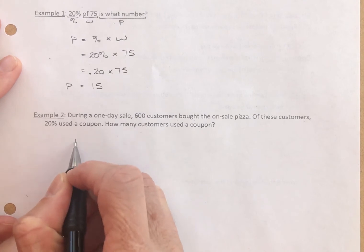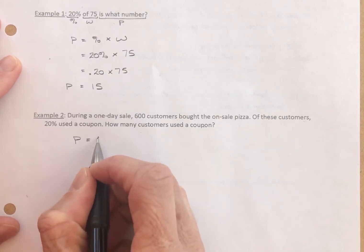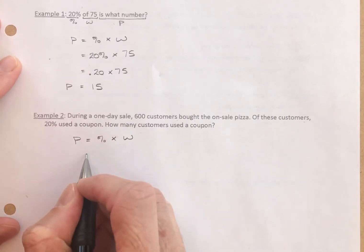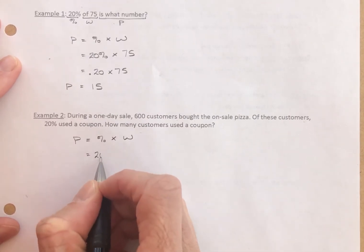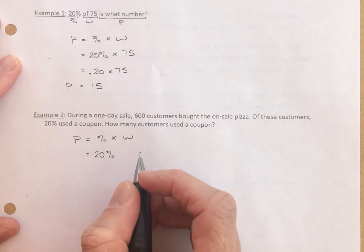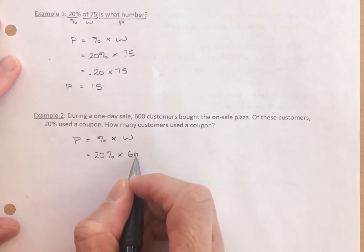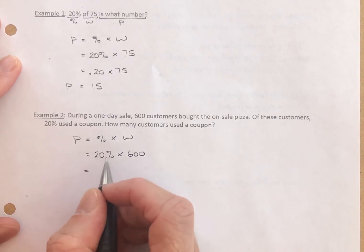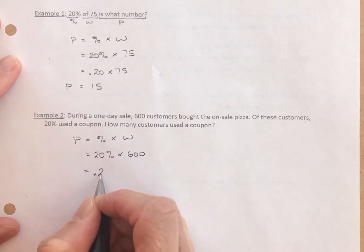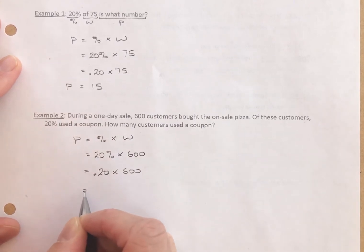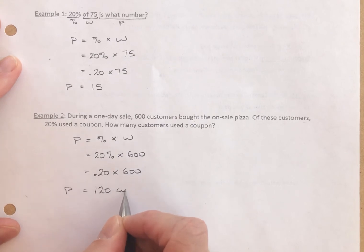So we can say the part is equal to the percent times the whole. So it's equal to the percent. Well, it's 20%. Use the coupon. The whole is 600. And, of course, 20%. We want to do math with it, so we're going to rewrite it in its decimal form. And we come up with 120 customers.